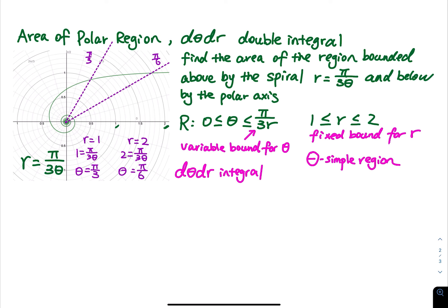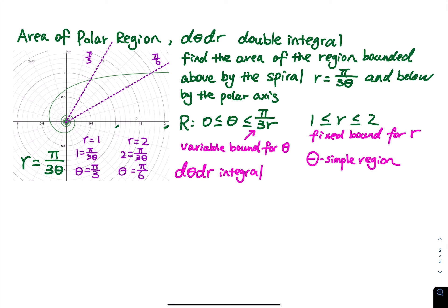We are looking for the area bounded above by the spiral r equals pi over 3 times theta and below by the polar axis. The region has theta between 0 and pi over 3 r, and r is between 1 and 2. Since r equals pi over 3 times theta, solving for theta gives theta equals pi over 3 times r — so theta is the variable bound and r is fixed between 1 and 2.